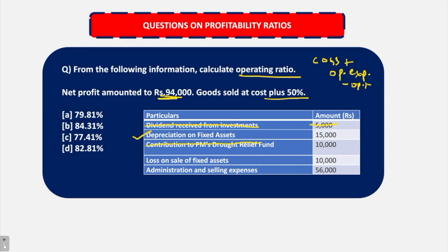Contribution — this is a charity, so this is also not a part of operating expenses or incomes. Loss on sale of fixed assets — not a part of operating expenses or incomes. Administration and selling expenses — yes, they are also operating expenses. So we have two operating expenses here that we have found out: 15,000 and 56,000.